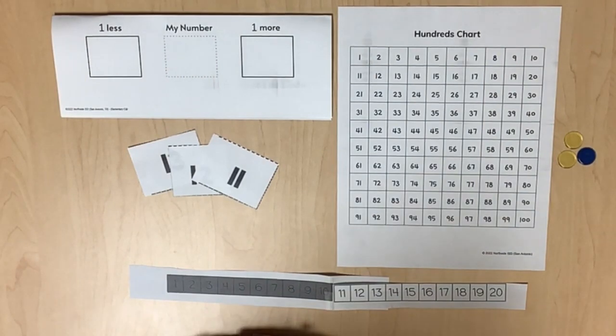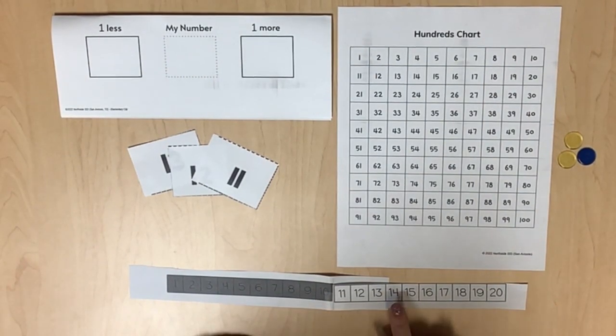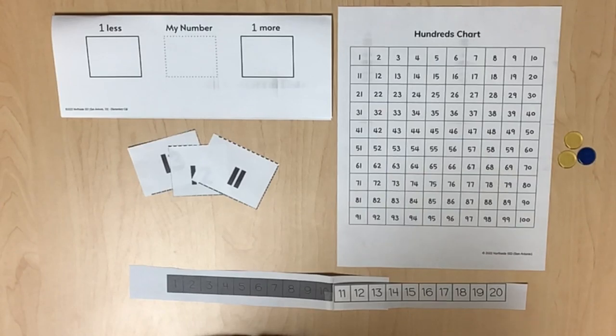A connection is made between a number path and a hundreds chart. We can continue to generate numbers that are one more than or one less than a given number. Present the number path that is shaded gray for the numbers 1 to 10 and white for the numbers 11 to 20.